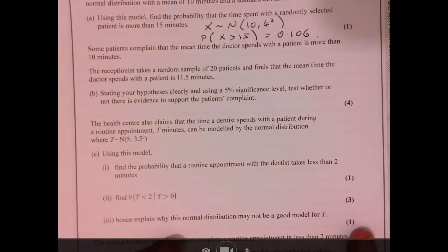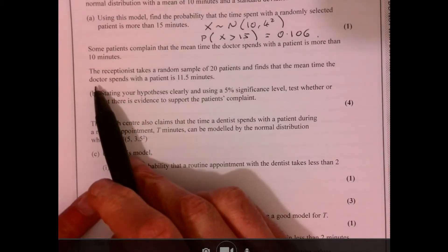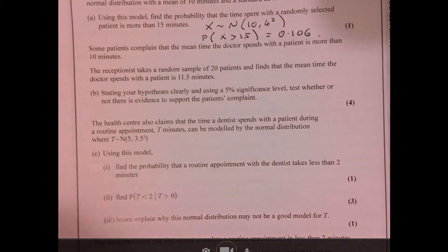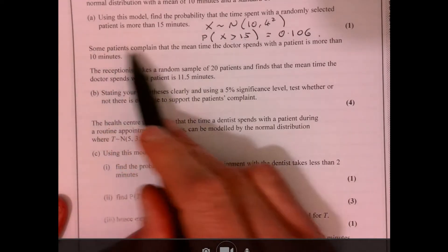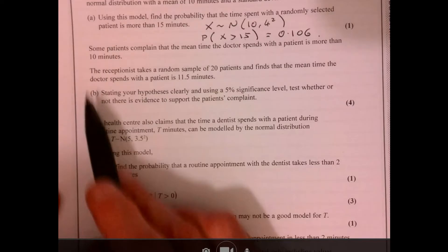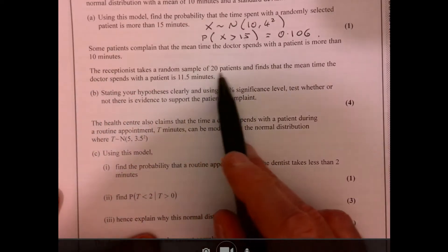So next part. Part B. What have we got to do here? So we need to carry out some hypotheses test. Some patients complain the mean time the doctor spends with a patient is more than 10 minutes. Receptionist takes a random sample of 20.